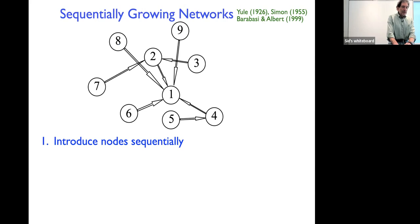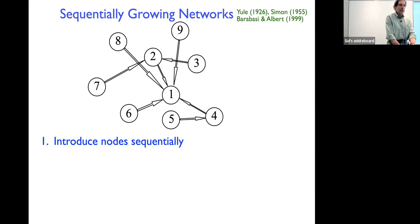This is a toy model, but it contains a lot of the richness of complex networks. Restricting to one citation per paper gives a tree-like network, but mathematically allowing more than one citation per paper gives more or less the same behavior. So we always look at the simplest case. We introduce nodes one at a time sequentially, and the key input is the attachment rate a_k — the rate at which you attach to a node of degree k.